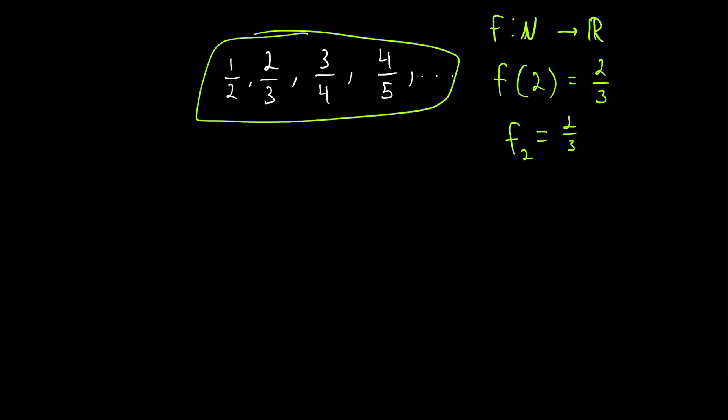You might notice that this sequence follows a pretty simple pattern. The fourth term, for example, has four in the numerator, and the denominator is one greater. It's five. And, in general, for this sequence, the nth term fn is equal to n divided by n plus one. Again, looking at our example, f sub two, the second term, is two divided by two plus one, divided by three.